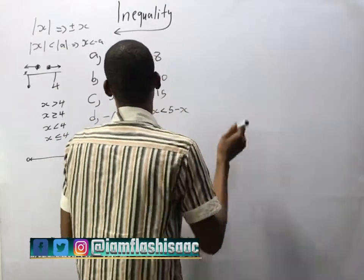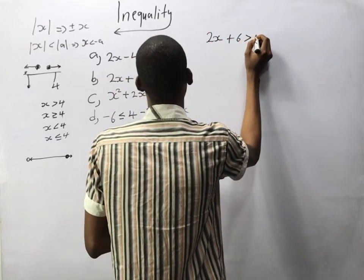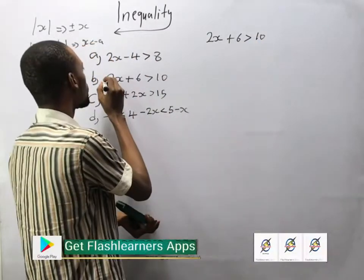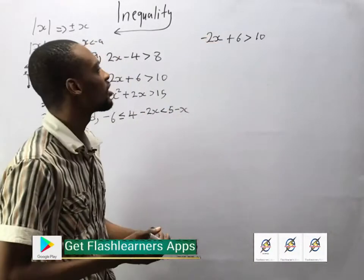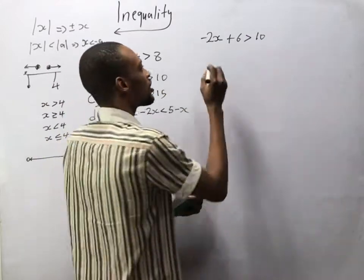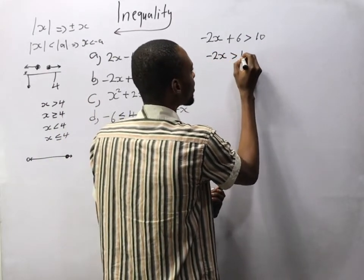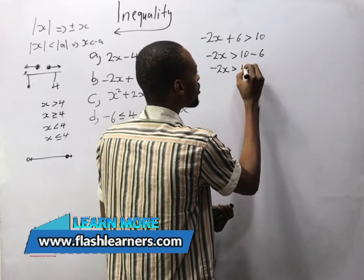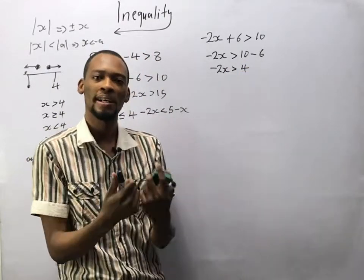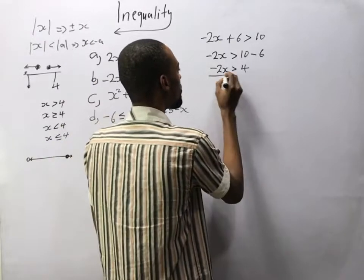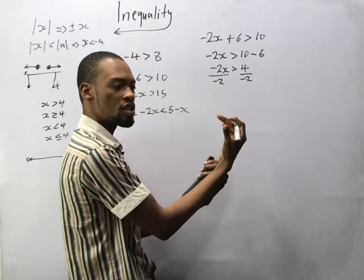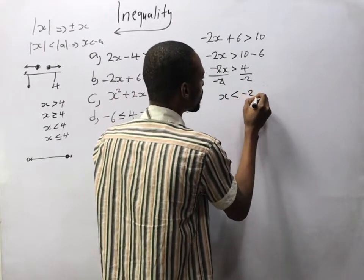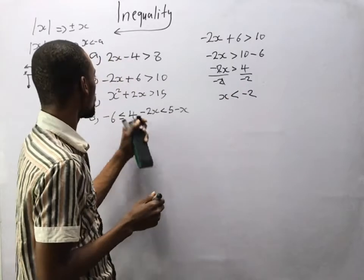The second question is minus 2s plus 6 is greater than 10. Collecting like terms, it becomes minus 2s is greater than 10 minus 6, so minus 2s is greater than 4. Now to get s we divide both sides by minus 2. Since we've divided both sides by a negative number, the sign changes — it becomes s is lesser than minus 2.